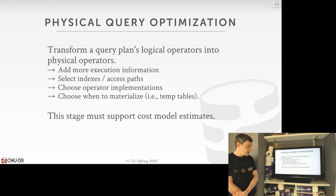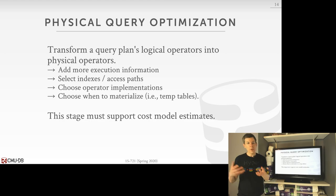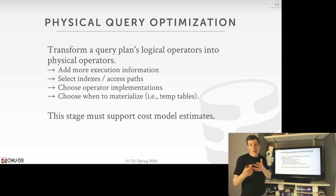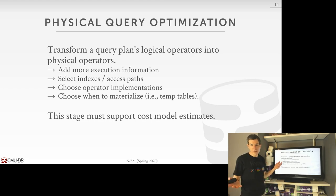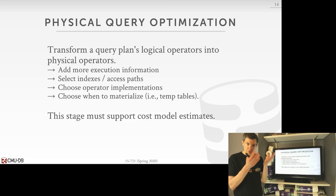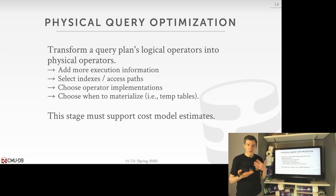Now let's talk about physical optimization. We have a logical query plan with logical operators, and we want to transform them into physical operators that we can then either code-generate (if we're doing compilation) or actually execute in our execution engine. The most obvious transformations are specifying how to actually access the table — sequential scan or index scan, and which index to pick — as well as adding execution information about how data is represented or sorted, choosing operator implementations for joins, deciding which join algorithm to use, how to do aggregation, and when to materialize data for subqueries, views, or CTEs.